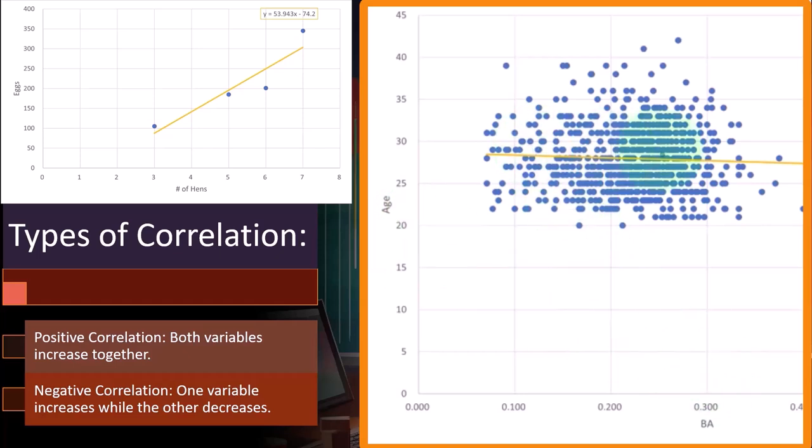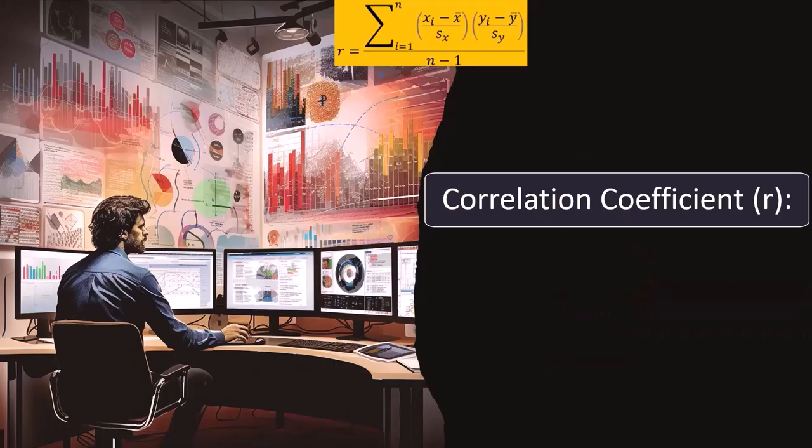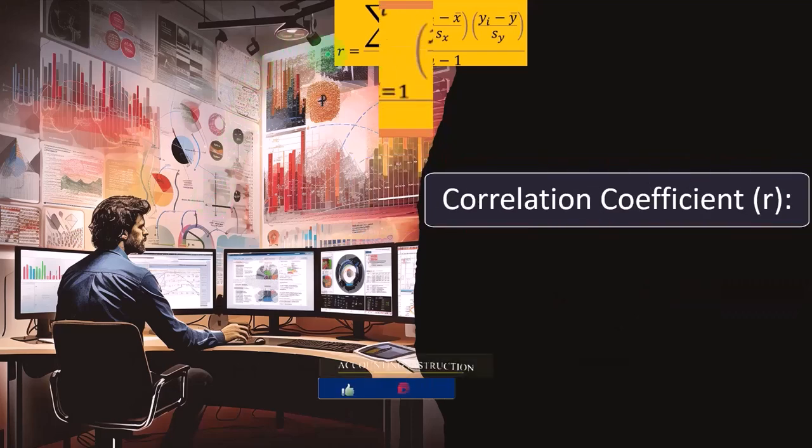Whichever variable we put on either axis, if there's a negative correlation it'll still be negative and if it's a positive correlation it'll still be positive. But by tradition we'll typically put the independent or what we think is the causal factor on the x. Correlation coefficient we usually represent it with an r.